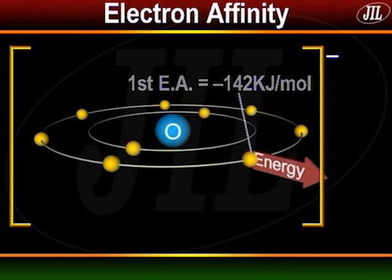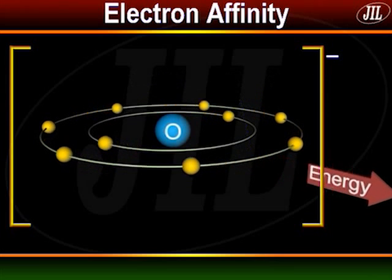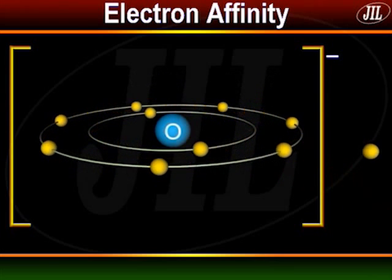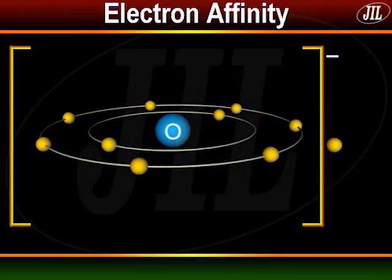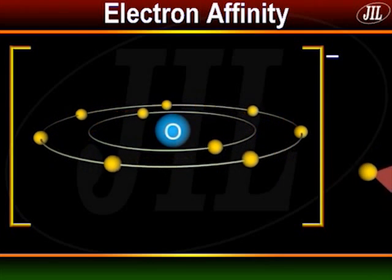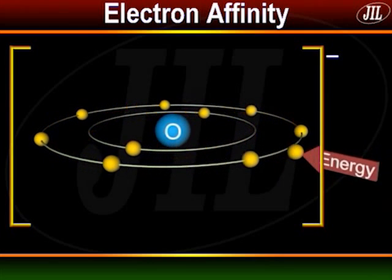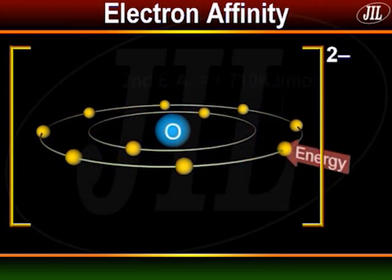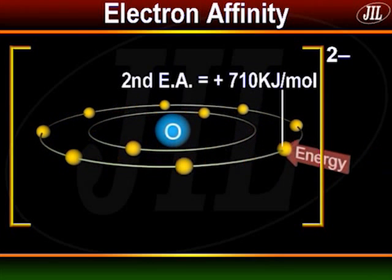When one more electron is added to the ion, we measure the second electron affinity. In the case of oxygen, it is plus 710 kilojoules per mole.